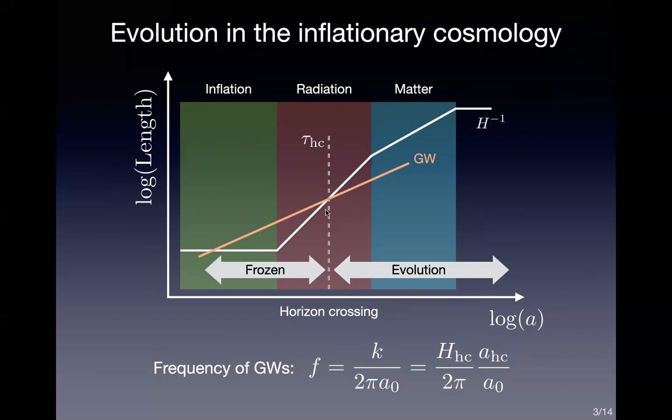Before the horizon crossing time, the amplitude of gravitational waves is frozen. After that, it starts to evolve. Considering this fact, we can see that the frequency of gravitational waves is given by the Hubble parameter at the horizon crossing.